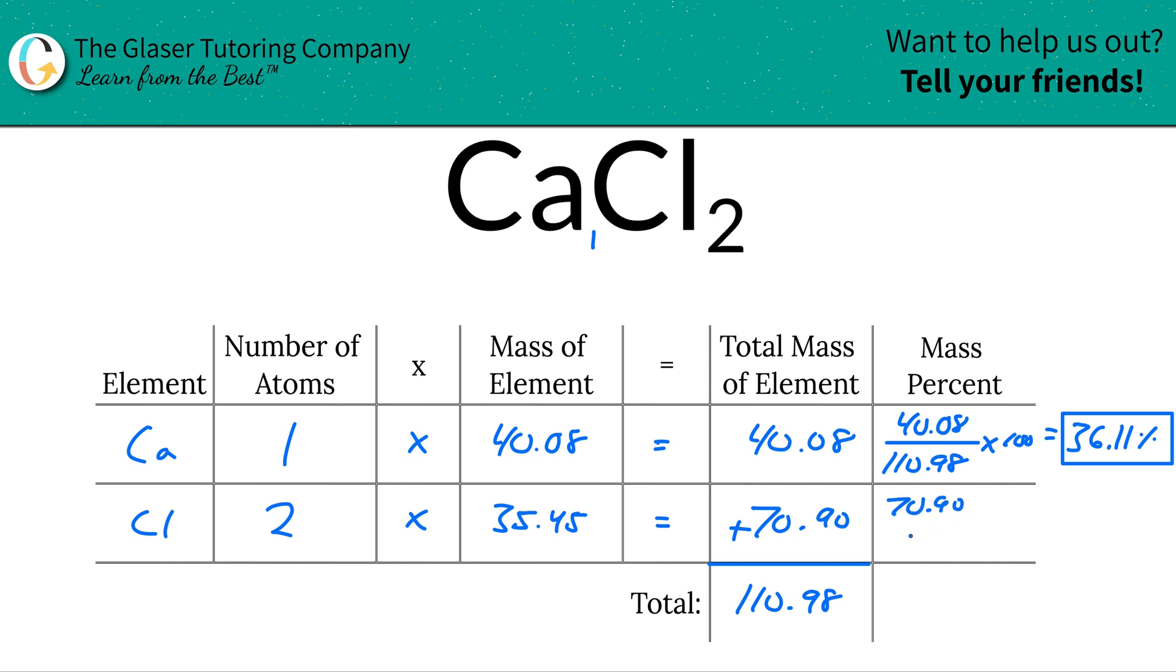We'll take the 70.90, the total for chlorine, and then divide it by the total mass of 110.98, multiply it by 100. And this is going to be 63.89%.